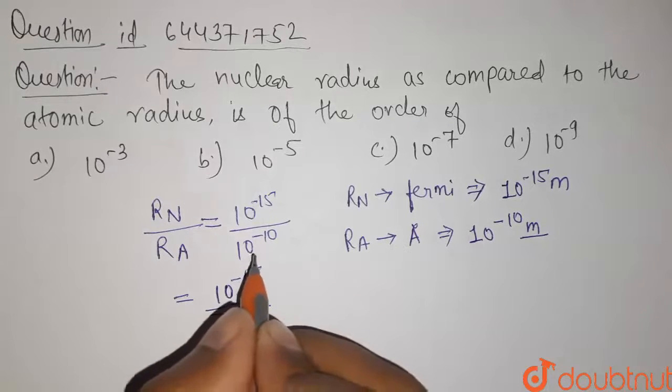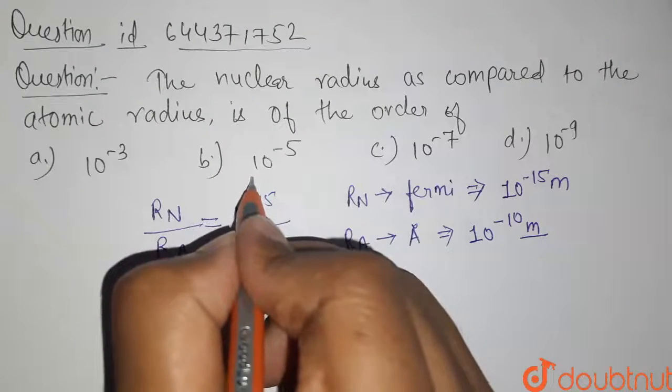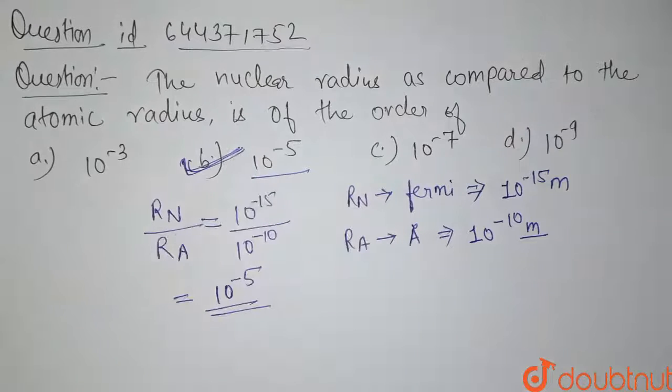The answer for this question is 10 to the power minus 5. Option b is 10 to the power minus 5, so it is our correct answer. Thank you.